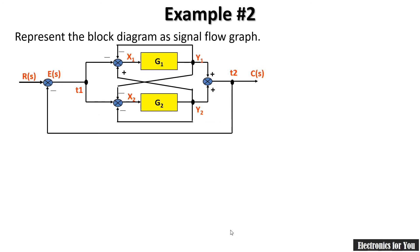The second problem is somewhat more complex. We have to represent this block diagram as a signal flow graph. Note that the nodes T1, T2, Y1, Y2, X1, X2 are already named so I will not rename them. The first node is the summing point E(s), and then T1.